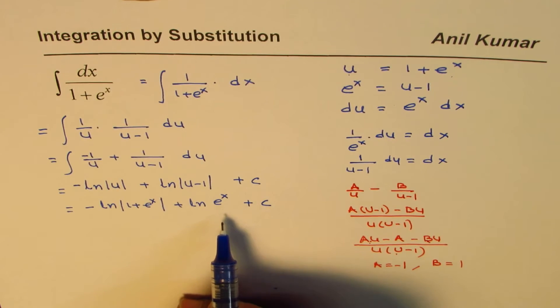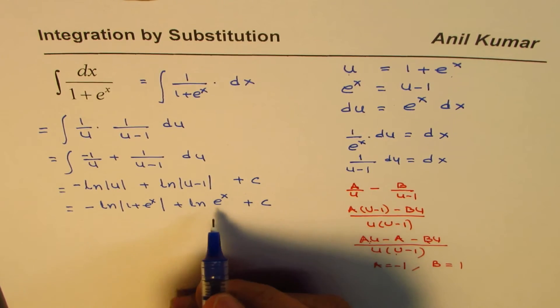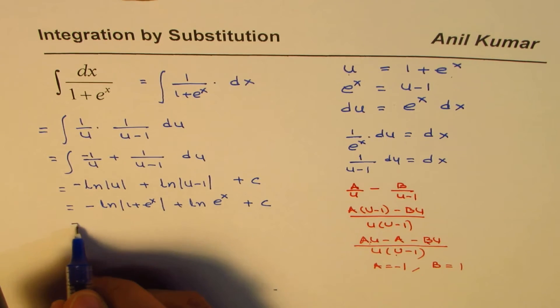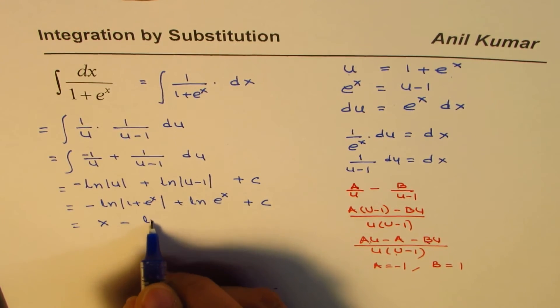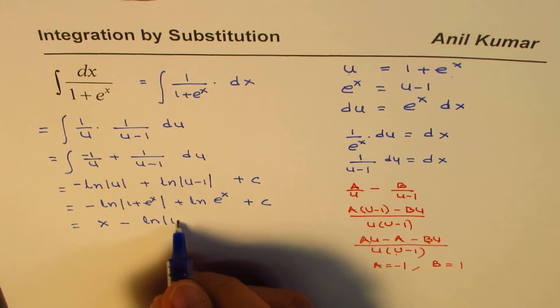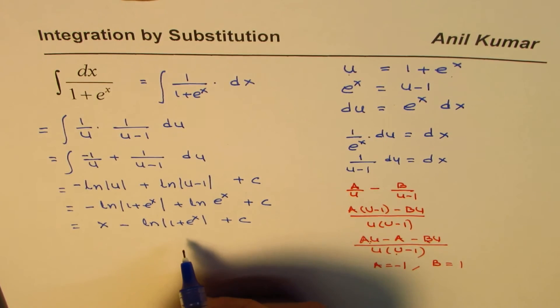So we can rearrange this. So let me write this first. We get x minus ln of 1 plus e to the power of x plus c as our answer. So that is the answer which we get for this particular question.